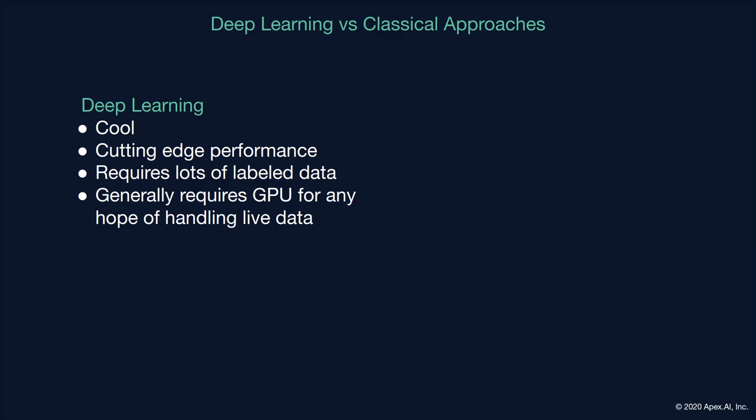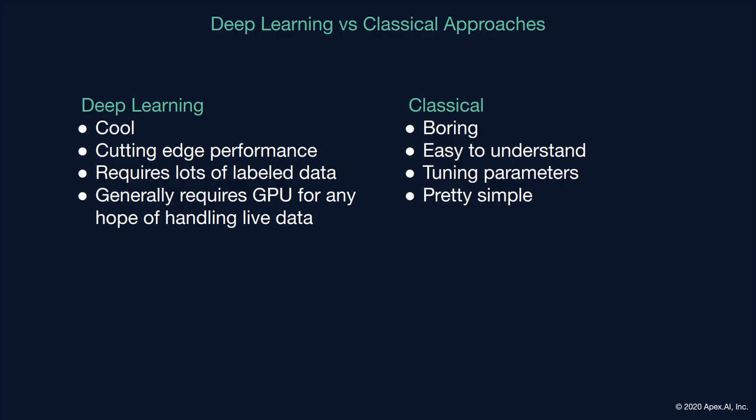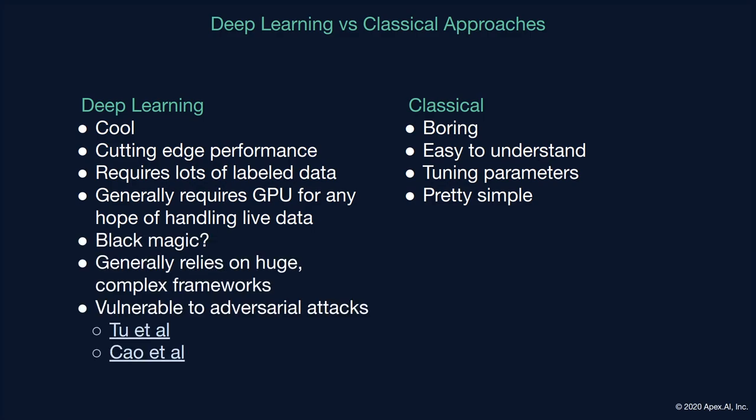There are some downsides to deep learning, though. It's not controversial to say that deep learning approaches require a significant amount of data, be it labeled or otherwise. It's also generally not controversial to say that a typical network requires a GPU to have any sort of reasonable runtime characteristics. By contrast, classical approaches are not quite so cutting edge, but they are generally very easy to understand and simple. Classical approaches typically don't require data to the same degree as deep learning approaches, though you trade that off for having tuning parameters that you need to fiddle with.